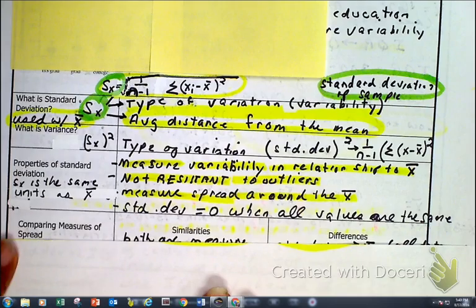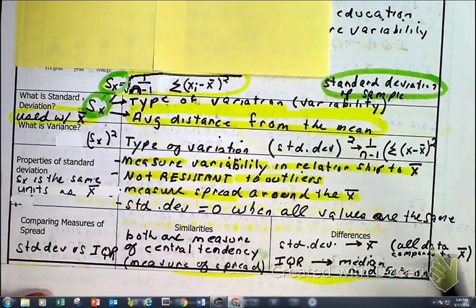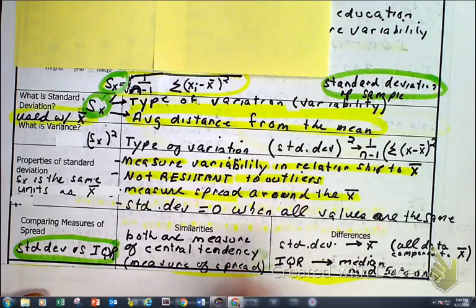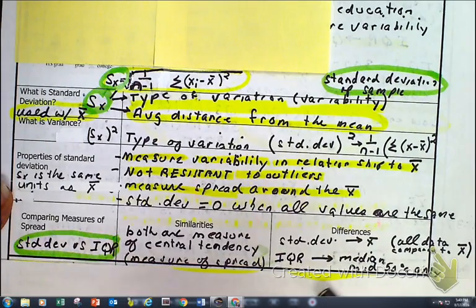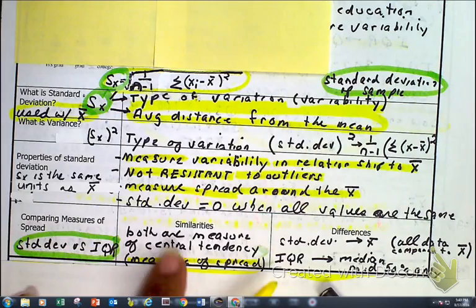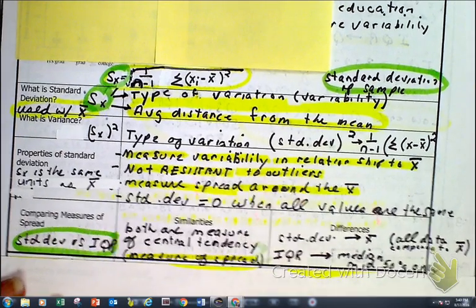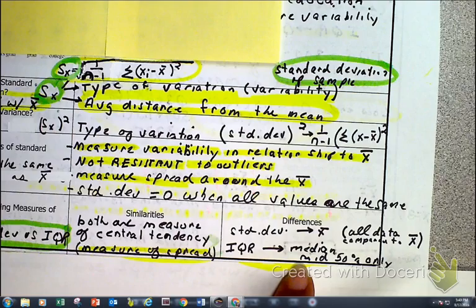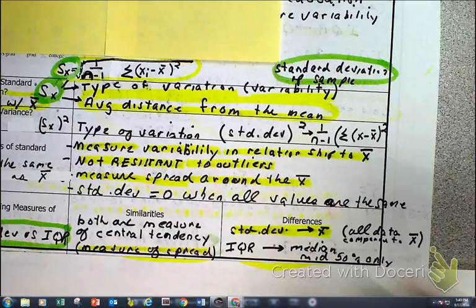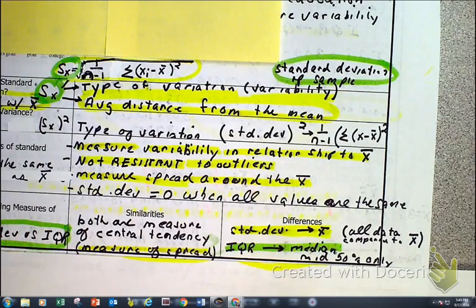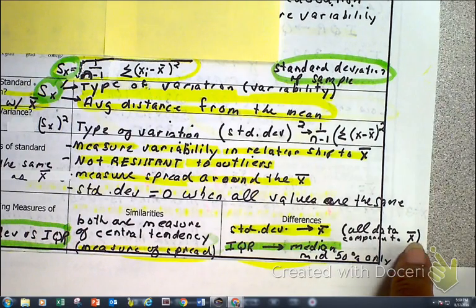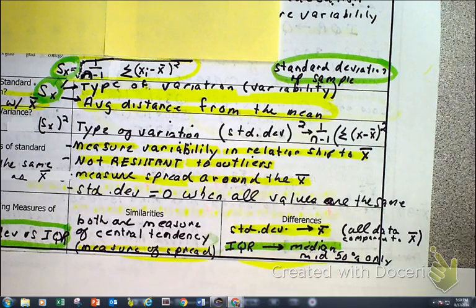Now, comparing measures of spread, we can do a comparison between standard deviation and IQR. They're both measurements of spread. We use standard deviation when looking at the mean, and we use the IQR when comparing the median. The standard deviation takes into account all the values — each individual value's relationship to the mean — whereas the IQR is just talking about the middle 50% of the data when it's in order.